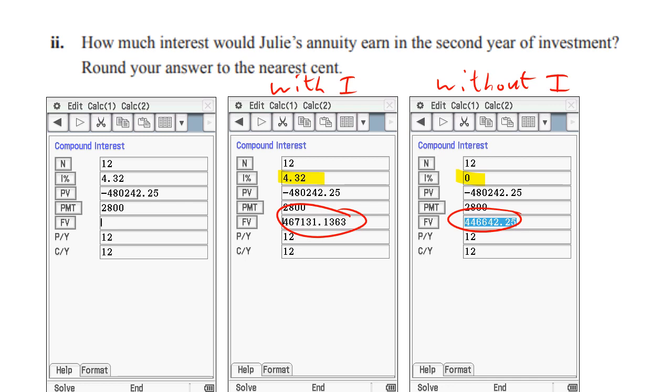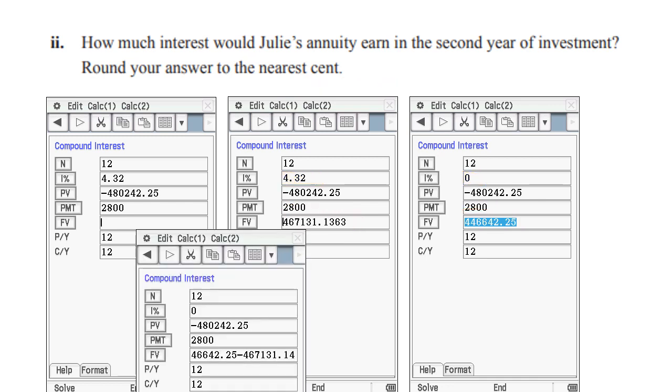And so if you subtract those you'll get your interest payment. Liam will also tell you that you could actually just type that into your calculator there you don't have to go to the main section. So that's another trick and you will get that value.